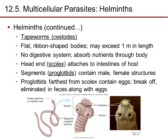Tapeworms, or cestodes, have flat ribbon-shaped bodies that may exceed one meter in length. They have no digestive system but absorb nutrients through their body, competing with their host's nutrients. The head end, the scolex, has hooks that attach to the intestinal wall. Segments called proglottids grow out behind it and contain male and female structures. Proglottids farthest from the scolex contain eggs; they break off and are eliminated with feces, and the eggs are ingested by the next host.